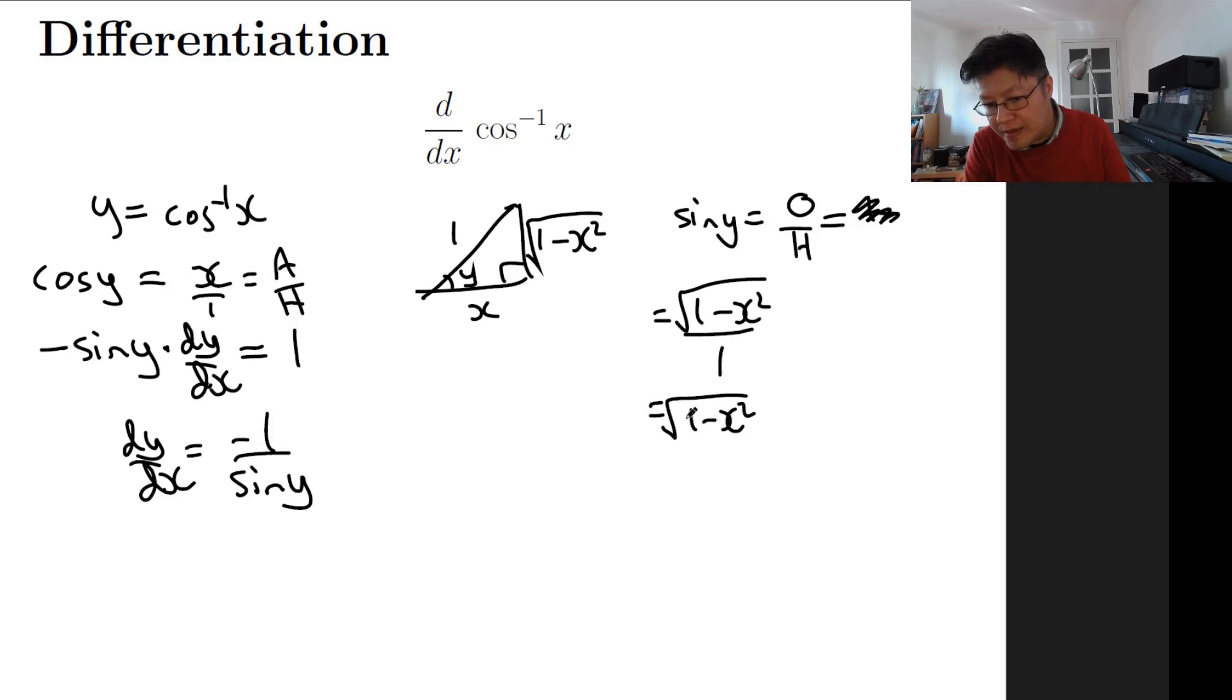And we can now plug this in over here to give us negative 1 over 1 minus x squared, all rooted. So that's the derivative of cos inverse - it's negative 1 over the square root of 1 minus x squared.